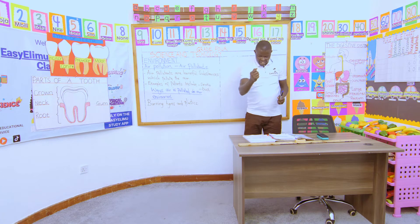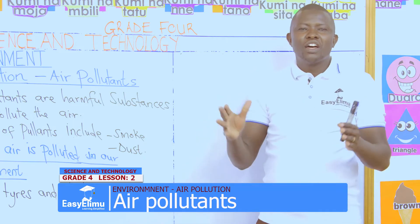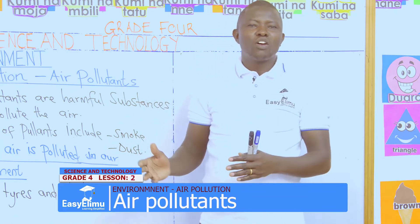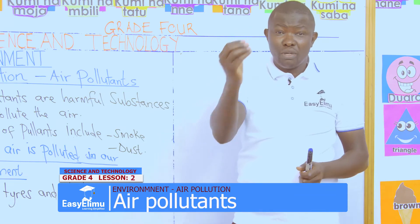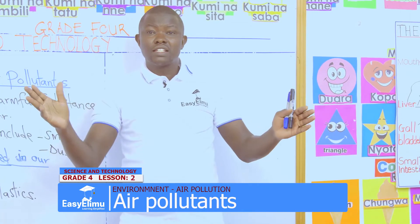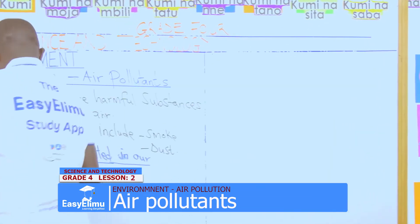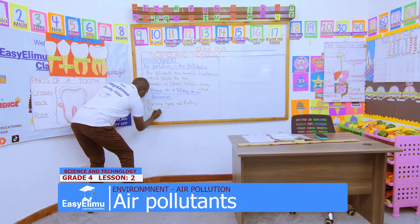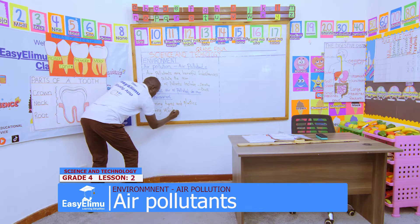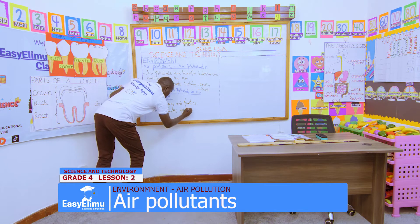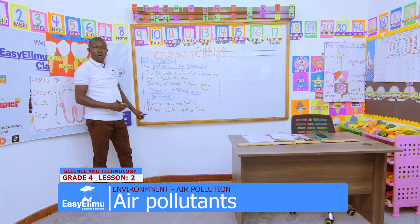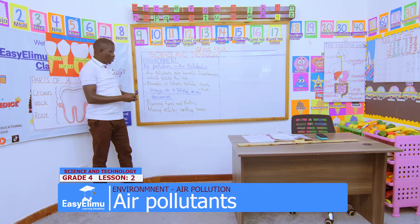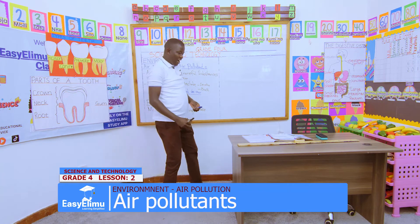Another thing you discussed — Wangari said that when vehicles move, they emit smoke from the exhaust. The smoke is polluting the air because it is smelly and even affects our visibility. So moving vehicles emitting smoke or gas is another example of a pollutant affecting the air around us.